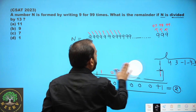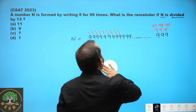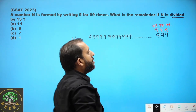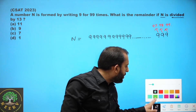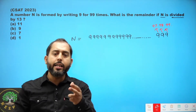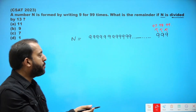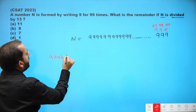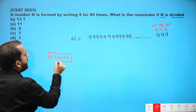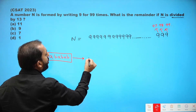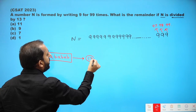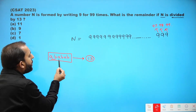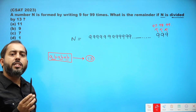I hope the divisibility rule of 13 is clear. Now the second thing: the pattern I have discussed. If a number is of the form ABABAB having 6 digits, then this number will always be divisible by 7, 11, and 13. So a number of the form ABABABABAB will be divisible by 13 for sure.